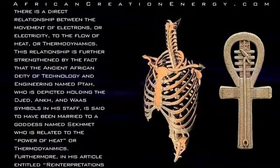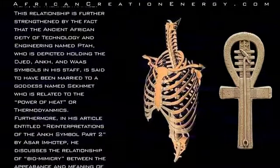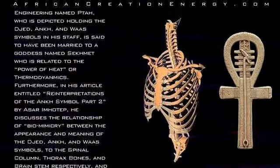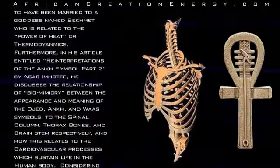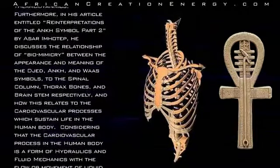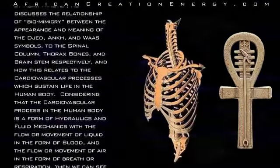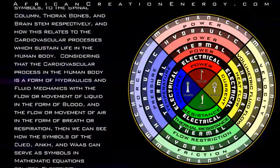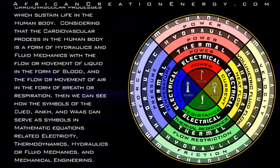Furthermore, in his article Reinterpretations of the Ankh Symbol Part II, Asar Imhotep discusses the relationship of biomimicry between the appearance and meaning of the Jed, Ankh, and Wa symbols to the spinal column, thorax bones, and brain stem respectively, and how this relates to the cardiovascular processes which sustain life in the human body. Considering that the cardiovascular process is a form of hydraulics and fluid mechanics — with the flow of liquid in the form of blood and the flow of air in the form of breath or respiration — we can see how the symbols of the Jed, Ankh, and Wa-S can serve as symbols in mathematic equations related to electricity, thermodynamics, hydraulics or fluid mechanics, and mechanical engineering.